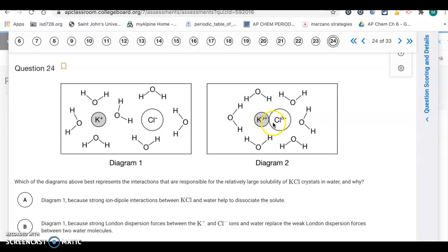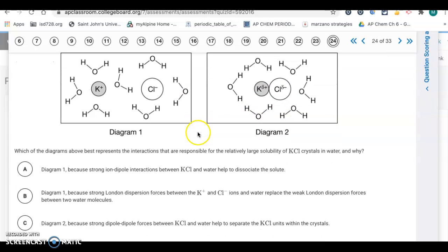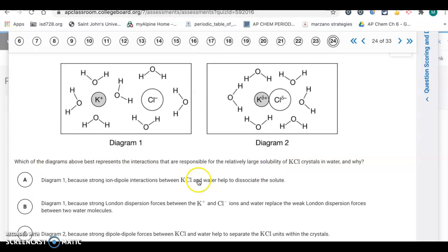This shows the KCl ions staying together. That's not what ionic solids do in solution. The ions will separate. Diagram 1 is better because strong ion-dipole interactions between KCl and water help to dissociate the solute. It's letter A.